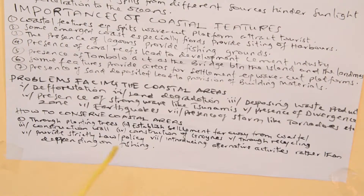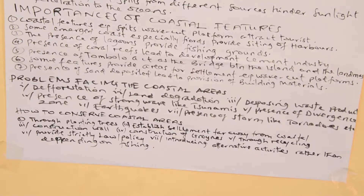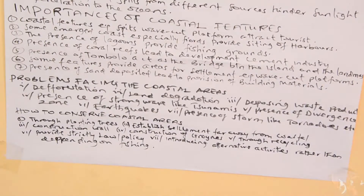How to conserve coastal areas: The coastal area is the landmass nearby the coast, and it faces different problems. What are measures for conserving these areas? One way is through planting trees along the coast, because trees and vegetation act as breakers for different movements. For instance, mud from the highlands that is drained by rivers will be caught by the vegetation, helping the coastal area remain intact.